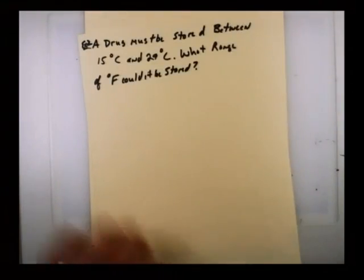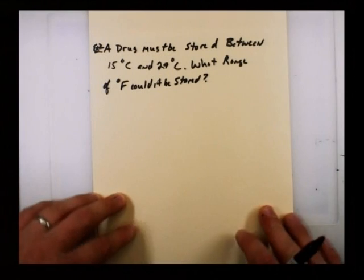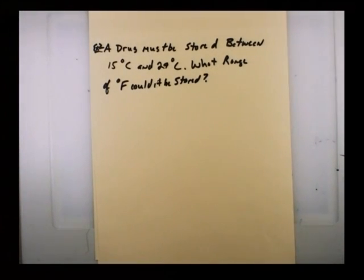Example 2. Let's get into something that's real life. This one, we've got a drug company. A drug must be stored between 15 and 29 degrees Celsius. Unfortunately, the nurses you're working with, their storage facility doesn't say Celsius on it, it says Fahrenheit. So what range of Fahrenheit would that be stored at, or where would it be safe?